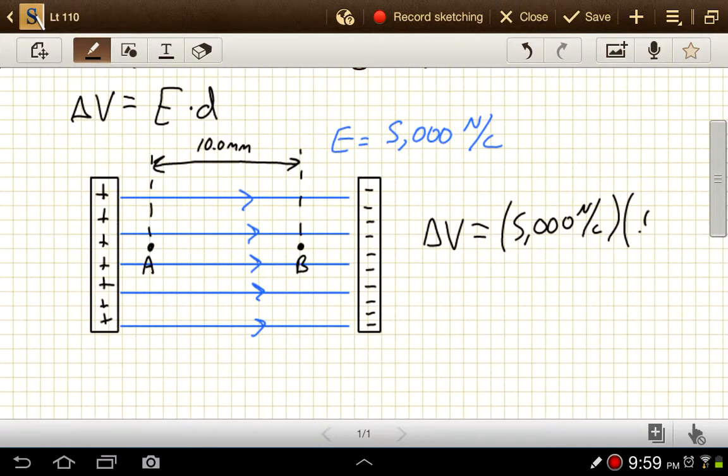So that'd be 0.01 meters. So our potential difference then is going to be 50 newton meters per coulomb, or joules per coulomb, or volts.